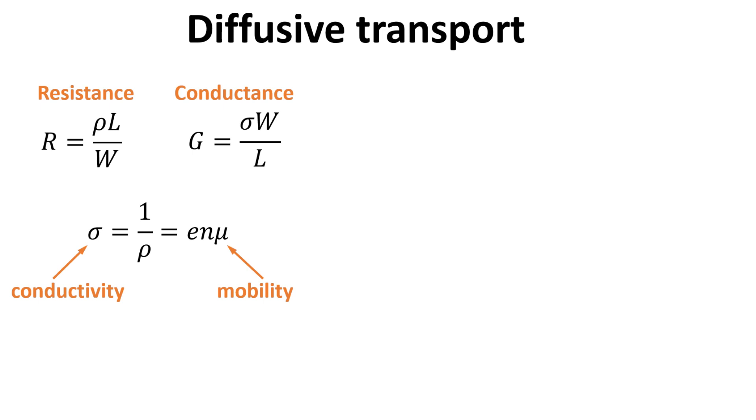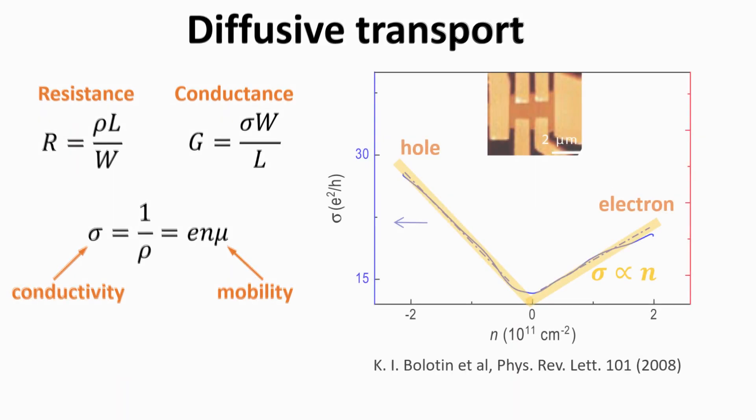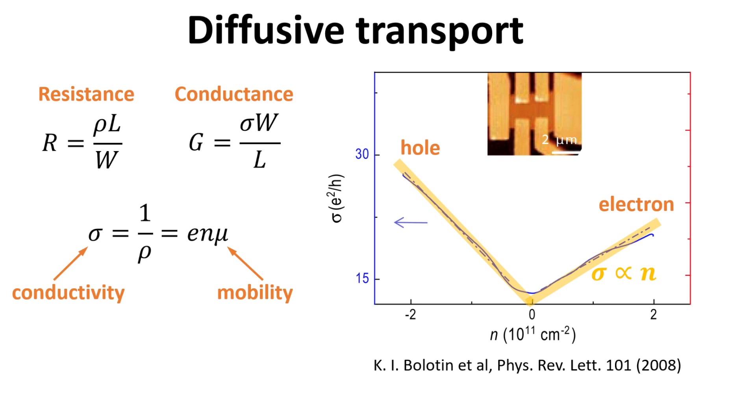Conductivity, sigma, is given by the electronic charge times the electron density n, times the mobility mu. Such linear dependence of carrier conductivity with density are typically observed in graphene devices, as shown on the right, particularly during the early days of graphene research.